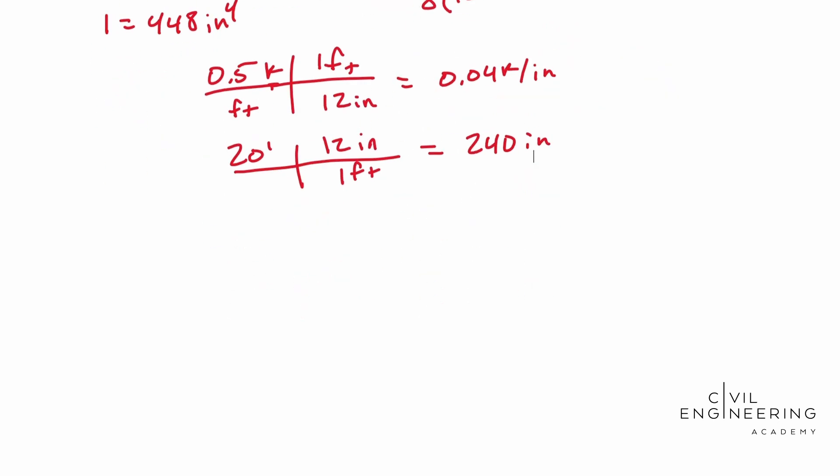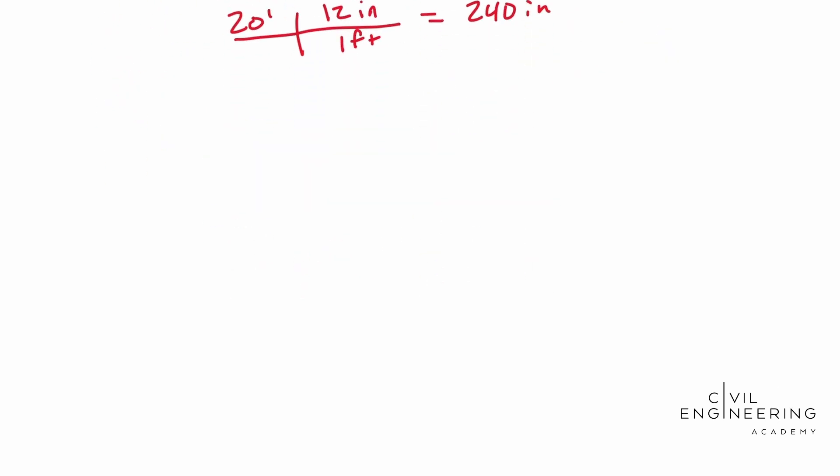So now we can actually plug and chug. Let's scroll down. Let's continue here. We have deflection at B being equal to our, I'm going to put the negative sign in there, 0.04 kips per inch times 240 inches, and that's going to be to the fourth. All of that over 8 times 10,000 KSI times 448 inches to the fourth.